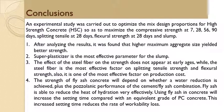An experimental study was carried out to optimize the mix design proportions for high-strength concrete so as to maximize the compressive strength and minimize the production cost. After analyzing the results, it was found that higher maximum aggregate size yielded better strength. Superplasticizer is the most effective parameter for the slump.